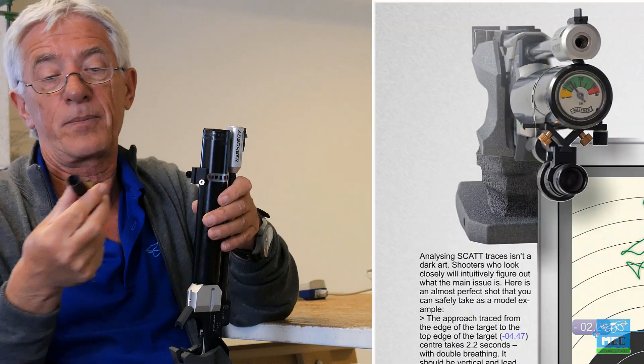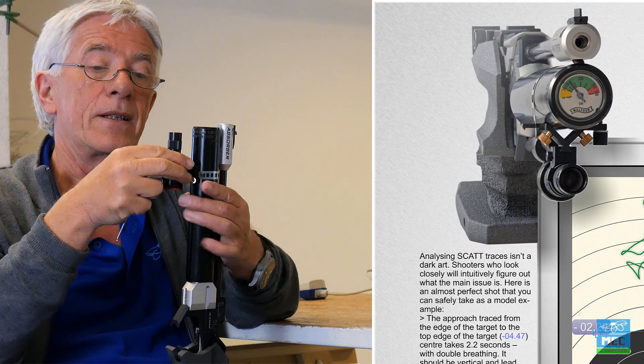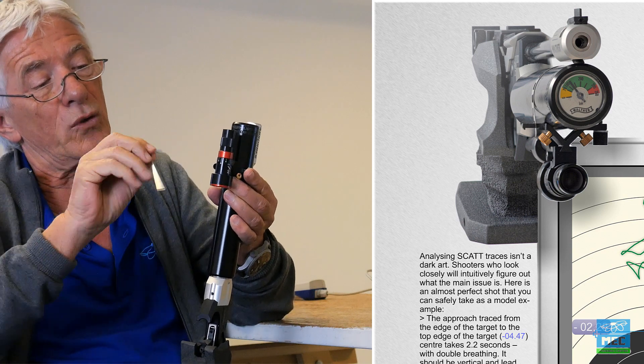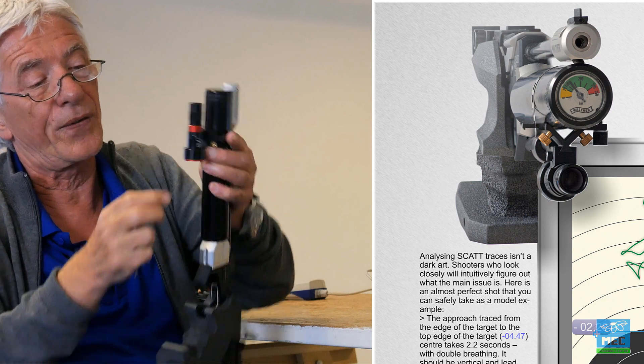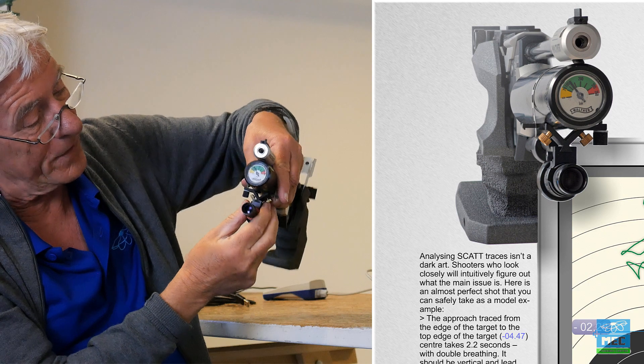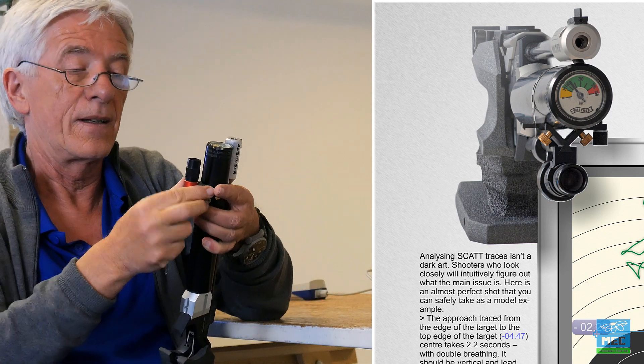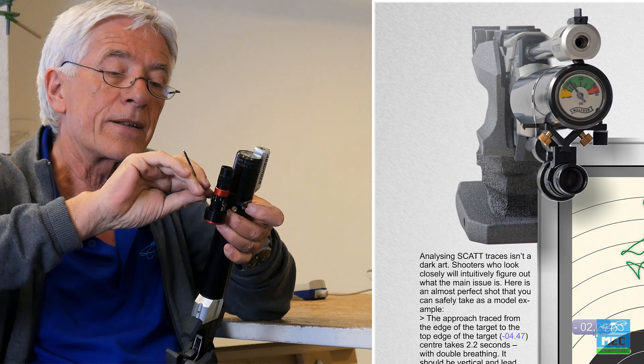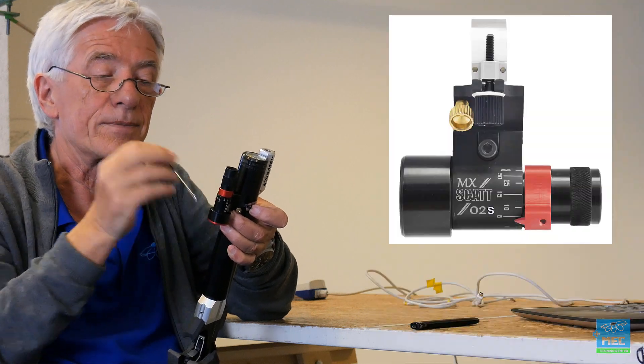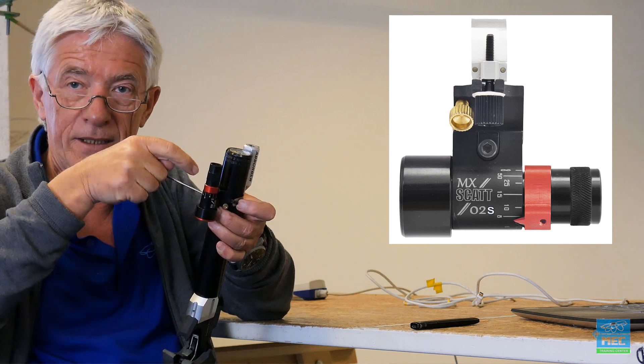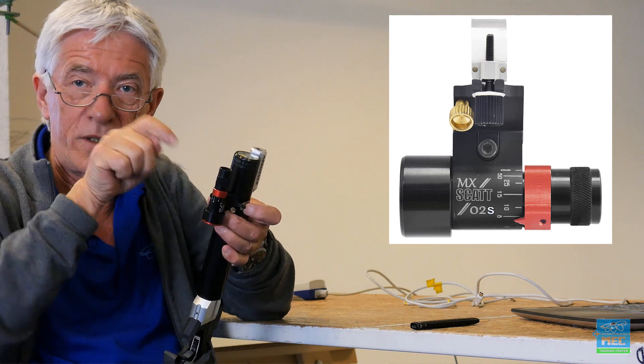So the next step is we bring the SCUT sensor or the camera onto this holder. There is a special rail for this. We take the key and fix it carefully. Again, it doesn't need too much strength.